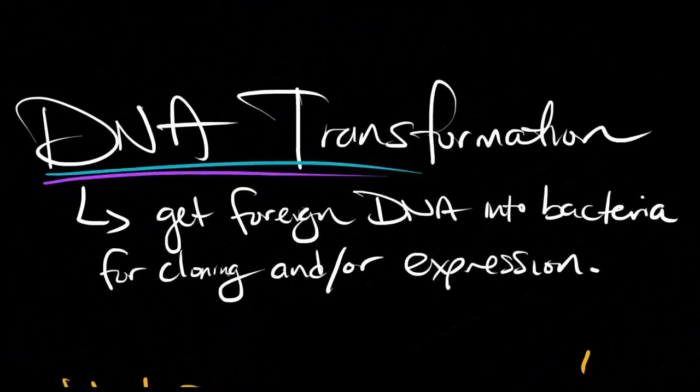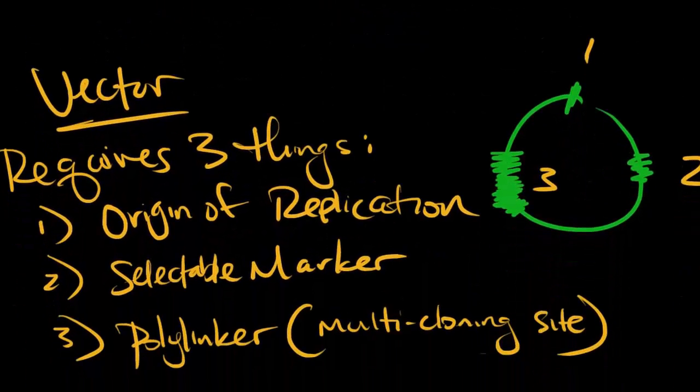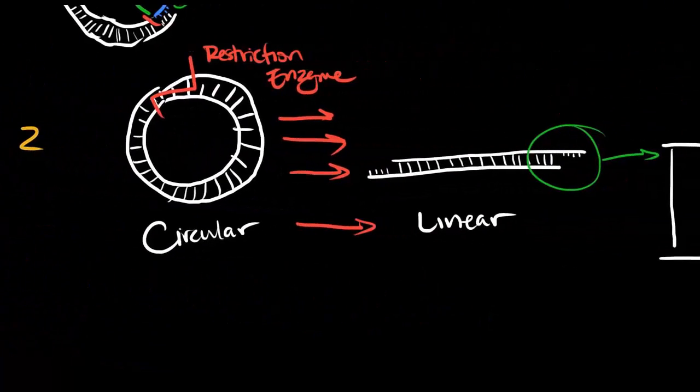HDAC's job is to remove the acetyl groups, bringing back the positive charge. This deactivates a gene by making it tight again. Think A for activating, DA for deactivating.